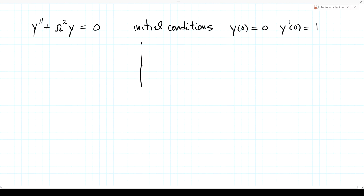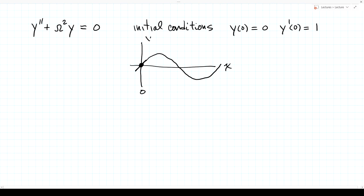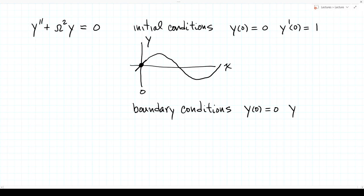In this case, here's x, with x equals 0. Our initial condition is that the function is 0 there but the slope is 1. The differential equation then gives us a formula to get values for greater values of x, giving us y as a function of x. Another way to specify solutions would be to specify boundary conditions — in electromagnetics, this is usually the method we use. That might have the form y(0) = 0 and y(1) = 0.